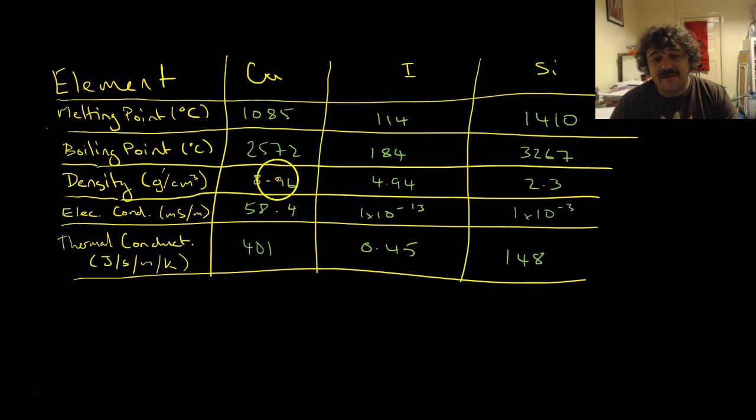Density, again, this is much denser than either of them really. That would be solid iodine. The electroconductivity of this is much higher than both of these.